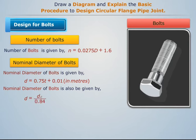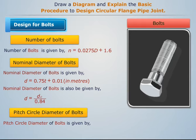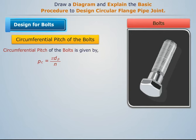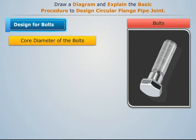The pitch circle diameter of bolts is given by its formula. The circumferential pitch of the bolts is also given by a corresponding formula. Now let's determine the core diameter of the bolts.